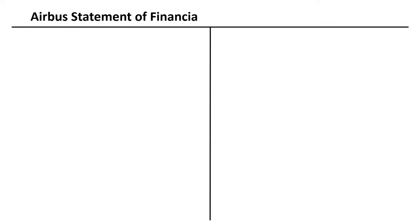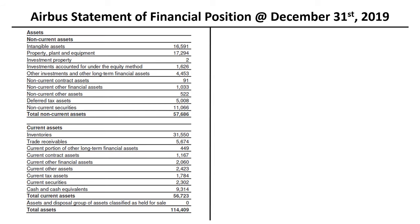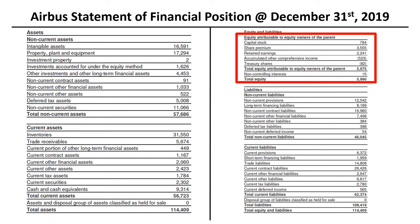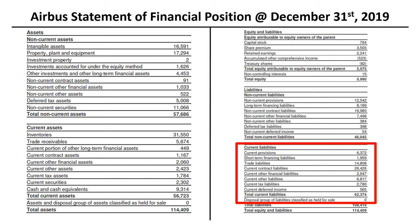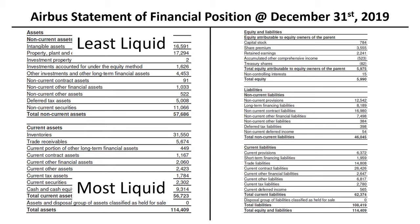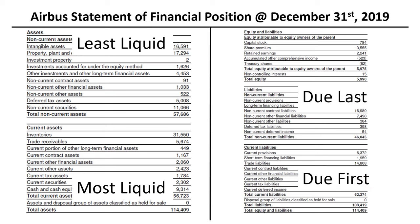Let's zoom into the statement of financial position in more detail and review what is in each of the balance sheet categories: non-current assets, current assets, equity, non-current liabilities, and current liabilities — same five categories, just a lot more detail to dig into. In the European format of the statement of financial position, assets are listed from least liquid to most liquid. Liabilities are listed from least to most due first. I will take you through the main line items.